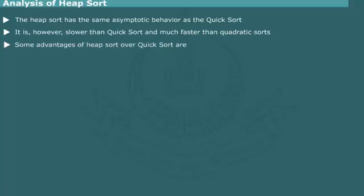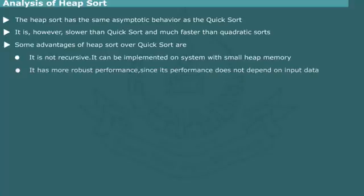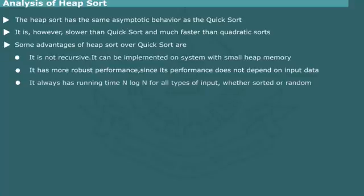Heap sort has some advantages over the quick sort. First, unlike the quick sort, it is not recursive. Second, compared to quick sort, it is more robust. This means that the performance of heap sort does not depend on the state of input data. It is always guaranteed to be proportional to n log n irrespective of the fact whether the input data is partially sorted or random.